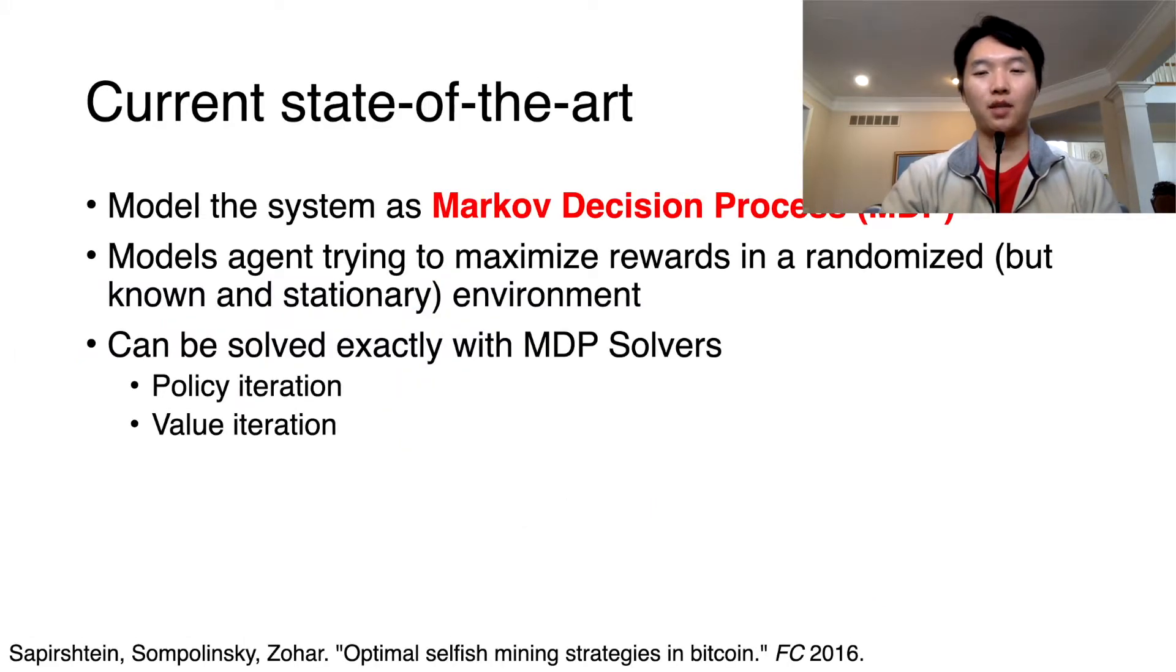The current state of the art in optimizing attacks is to model it as a Markov decision process. An MDP models the agent maximizing rewards in a randomized but known and stationary environment. This can be solved exactly using the following MDP solvers, which basically do dynamic programming: policy iteration and value iteration.